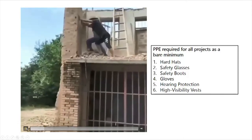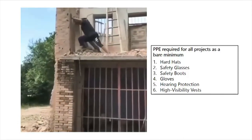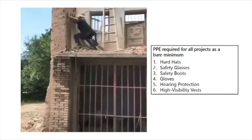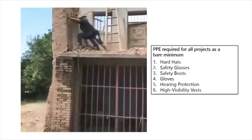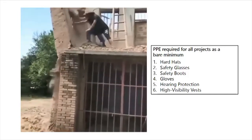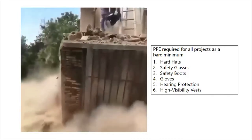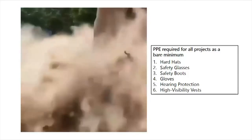This is a practical example of a near miss. As you can see, the wall is being demolished without following any standard procedure. Even if it had to be demolished manually, the workers should follow a proper method. This demolition is totally unplanned and puts the lives of the workers at risk of fatality. Also, the workers are not using any PPE.